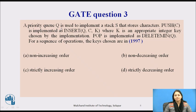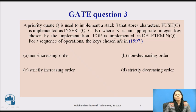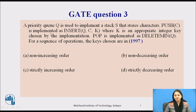Question 3: A priority Queue is used to implement a stack S that stores characters. Push(C) is implemented as insert into the Queue with C and an appropriate integer key chosen by the implementation. Pop is implemented as delete-minimum — meaning the minimum value is deleted from the Queue. For a sequence of operations, which key should be chosen?